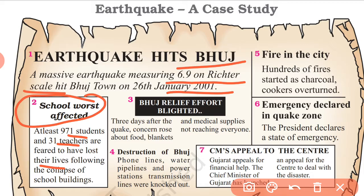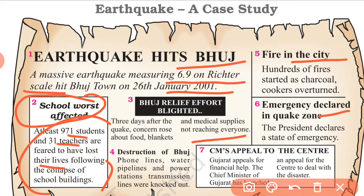Many people were endangered. After 3 days, medical supplies and other facilities were made available to all. The destruction included damage to phone lines, water pipelines, and power stations. Fires broke out in the cities. A state of emergency was declared by the president, and the Chief Minister appealed to the center for economic grants and help for the people.